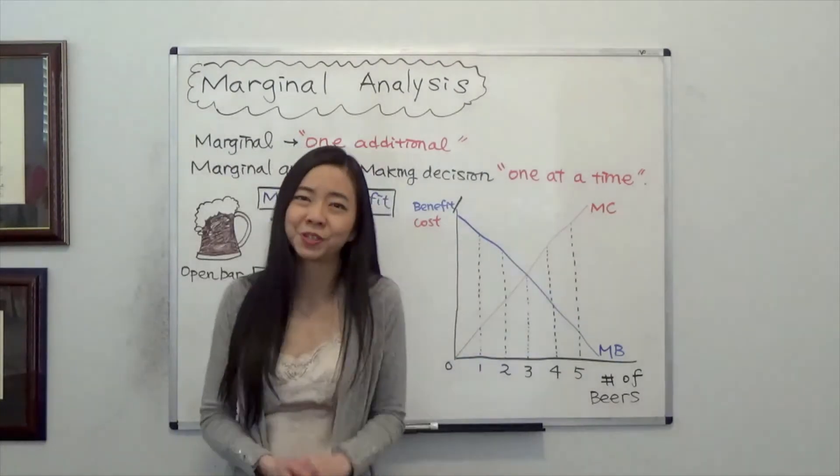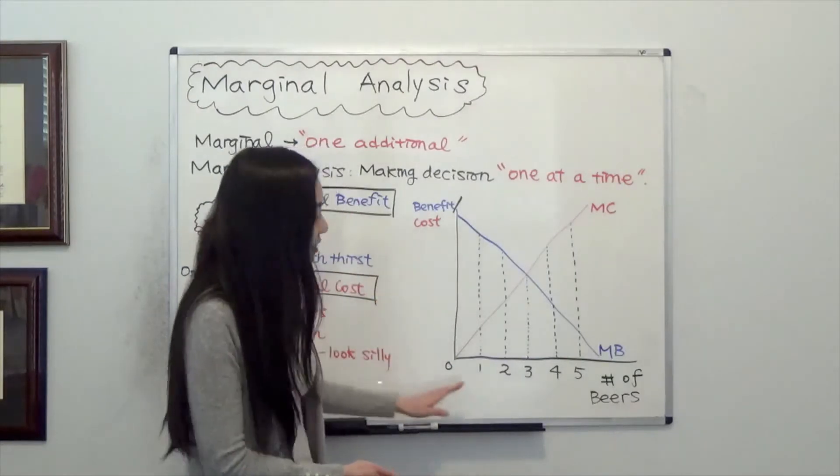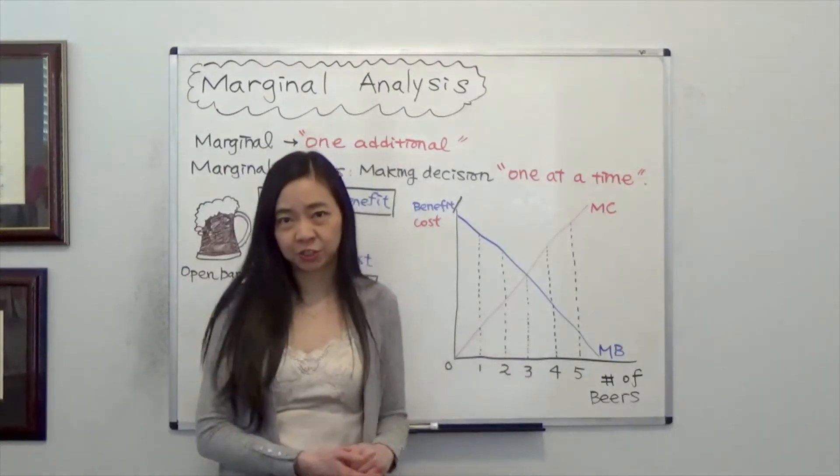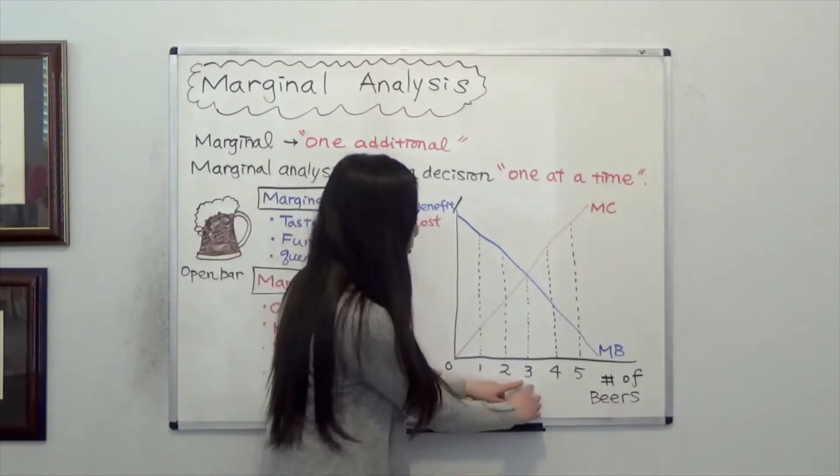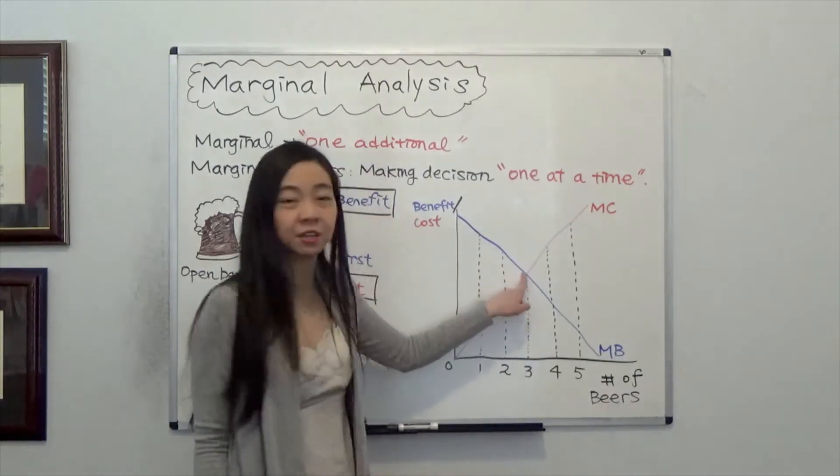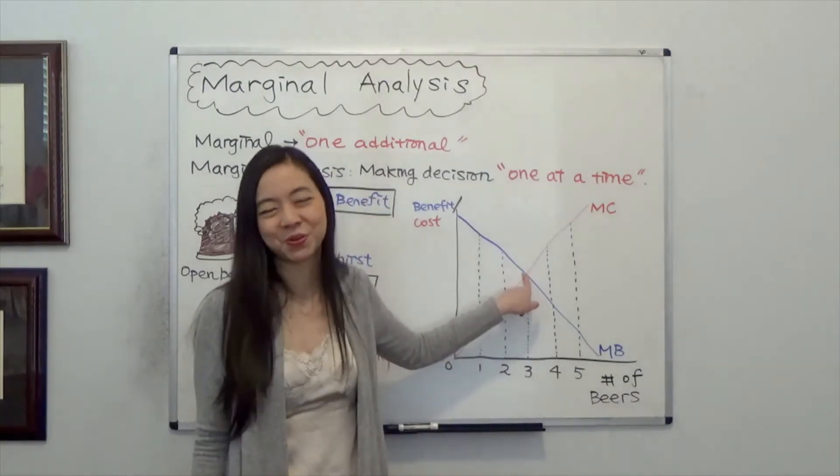Now, when do you stop drinking beer? In this example, if you're rational, you're going to stop at the third can when your marginal benefit is equal to the marginal cost. Why?